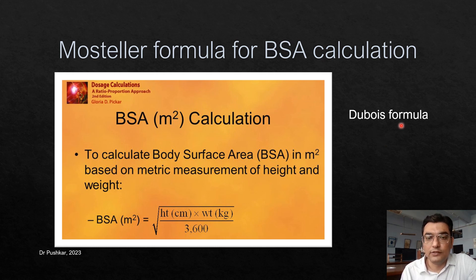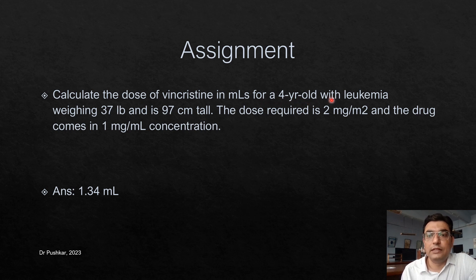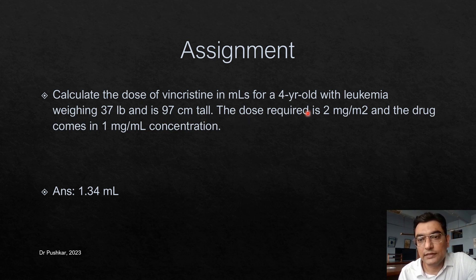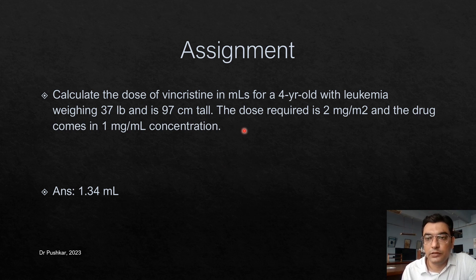There is also another formula known as the Du Bois formula, which is another method to calculate body surface area. For your assignment: calculate the dose of a drug in 1000 ml for a four-year-old with leukemia, weighing 37 pounds and 97 cm tall. The required dose is 2 mg per square meter and the drug comes in 1 mg/ml concentration. The answer is 1.34 ml — try to calculate it and share in the comments.